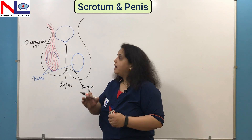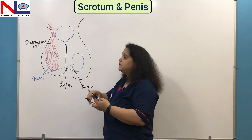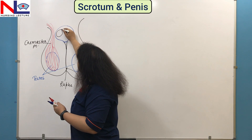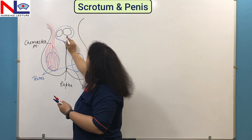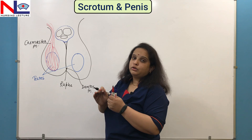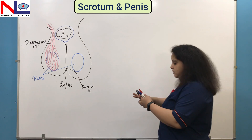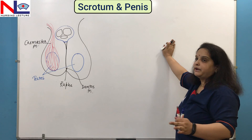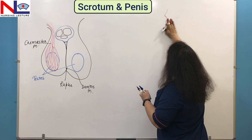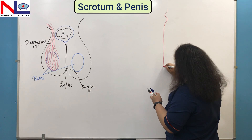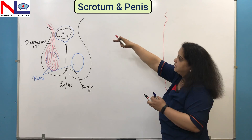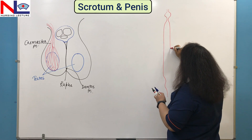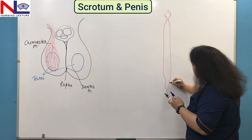The next supportive structure is the penis. The penis is a cylindrical structure, mainly composed of three erectile tissues. There are two dorsolateral masses and one mid-ventral small mass. The penis has three parts: the root, the body, and the glans penis. The innermost mass — the mid-ventral small mass — contains the male urethra, specifically the spongy urethra within it.